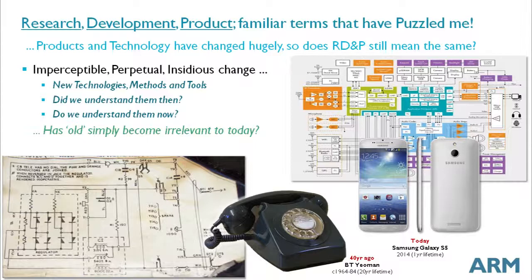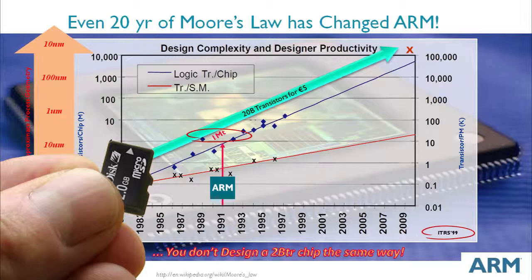You might conclude that old has simply become irrelevant, but I would challenge that because I don't think it's strictly true. Even in the last 20 years, Moore's law has significantly changed ARM. When ARM started, a typical integrated circuit was around a million transistors. Today you can get 20 billion transistors for 5 euros. You don't design a 20-billion transistor chip using the same approaches you used for a million transistors. So does history have nothing to teach us, no value to add in terms of these activities?